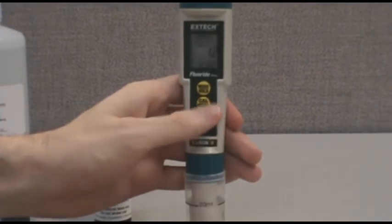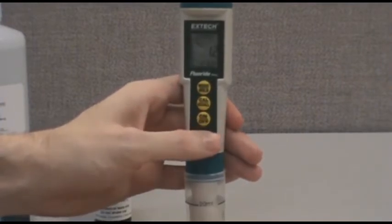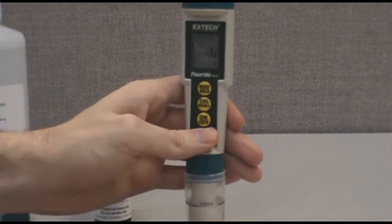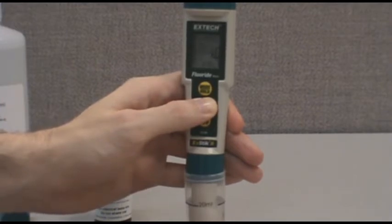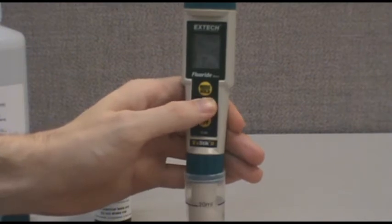Wait for the reading to stabilize. This will take approximately 35 seconds. Press and hold the Cal key. The display will cycle through the calibration values. When the display shows 1.0, release the calibration key.